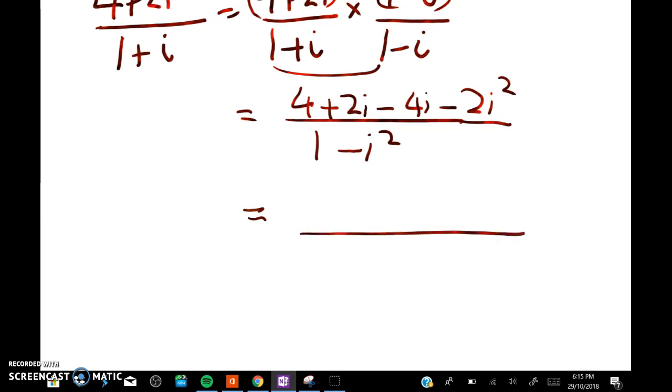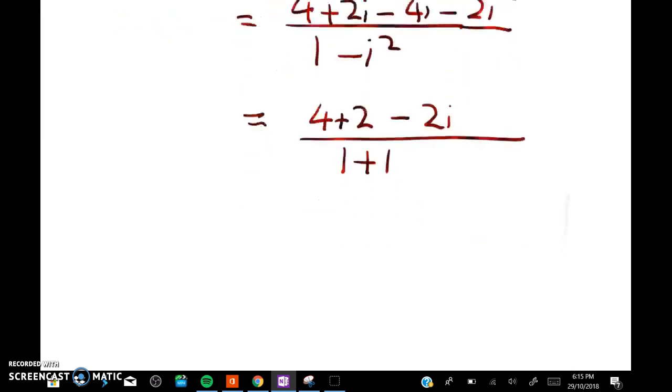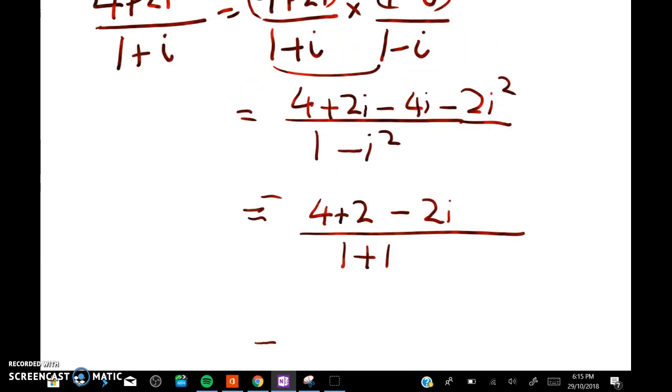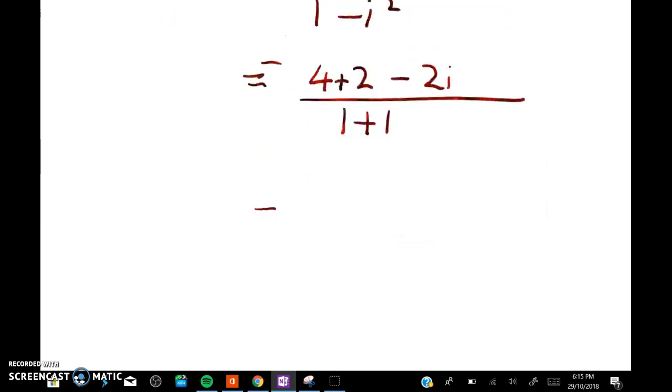So in the denominator, 1 minus i squared is equal to 1 plus 1, and in the numerator I've got 4 plus 2 minus 2i. So that gives me, 6 over 2 is equal to 3, so I've got 3 minus i.